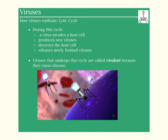So a big question we're going to look into is a physiological process: how viruses replicate. The first thing we're going to talk about is something called the lytic cycle. During this cycle, a virus will invade the host cell, produce new viruses, destroy the host cell, and then release newly formed viruses. Viruses that undergo this cycle are called virulent because they cause disease.